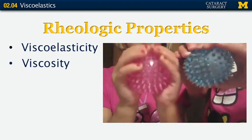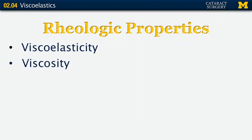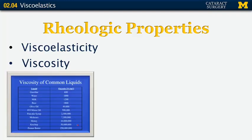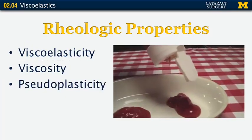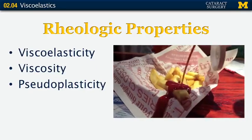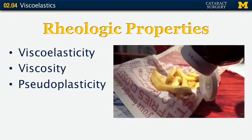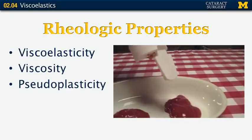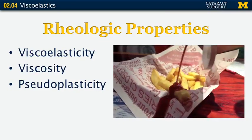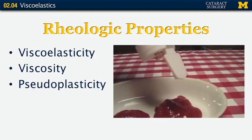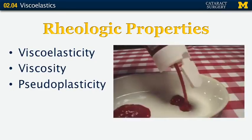We also need to understand viscosity — a substance's resistance to flow. Ketchup is actually more viscous than honey. Ketchup is ultra-resistant to flow. However, it is also highly pseudoplastic, and pseudoplasticity refers to a substance's ability to transform under pressure — something that's thick at rest and thinner at higher shear rates. So if you take bottled ketchup and place it under a super high shear rate, it behaves like a low viscosity substance and comes out a whole lot easier.